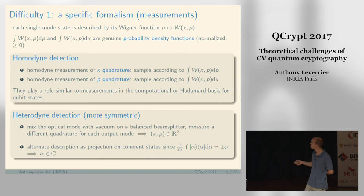This is heterodyne detection. It's more symmetric. An alternate description is just the projection into coherent states. You do this measurement and get a complex value as the outcome, which corresponds to these two real values.